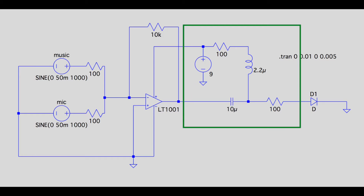The next part of the circuit is the bias T, which combines AC and DC signals. A capacitor is used to block DC current from entering the AC source, and an inductor is used to block the AC signal from the DC source. The bias T allows the diode to achieve its required voltage and current levels.